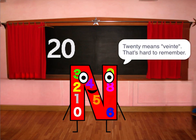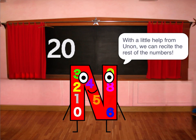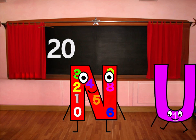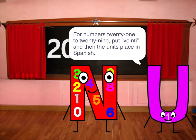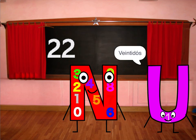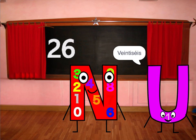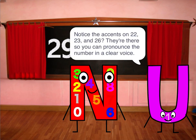Veinte means 20 — that's hard to remember. With a little help from one, we can recite the rest of the numbers. For numbers 21 to 29, put veinte and then the units place in Spanish: 21, 22, 23, 24, 25, 26, 27, 28, 29. Notice the accents on 22, 23, and 26 — they're there so you can pronounce the number in a clear voice.